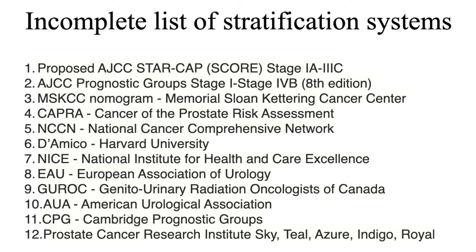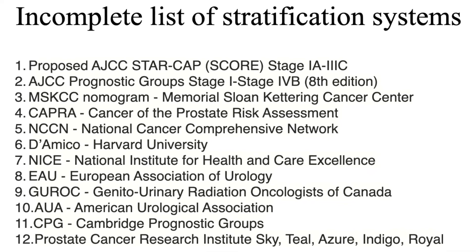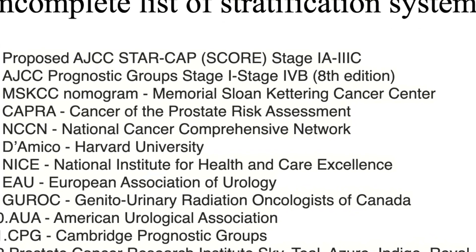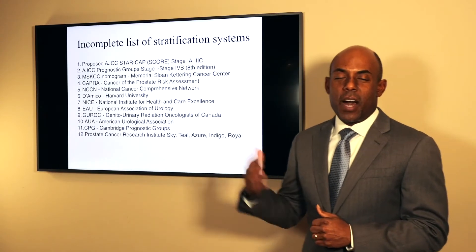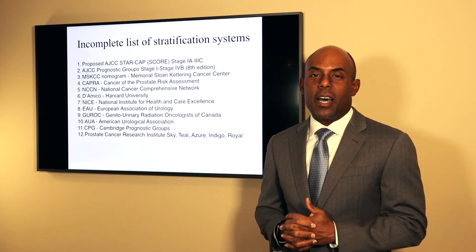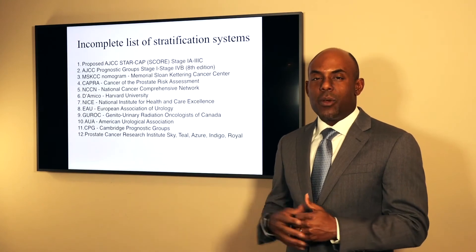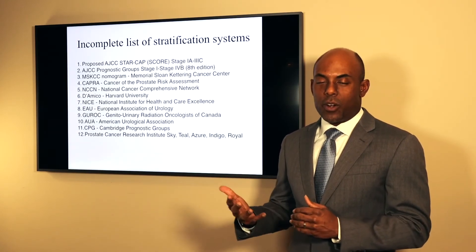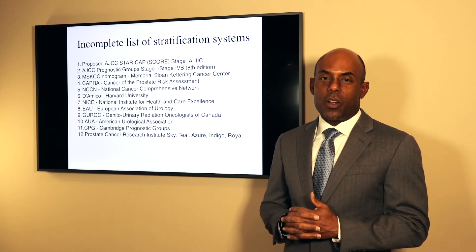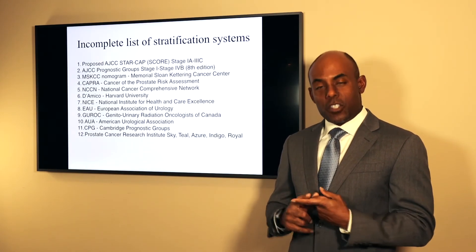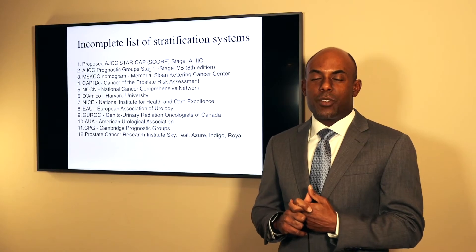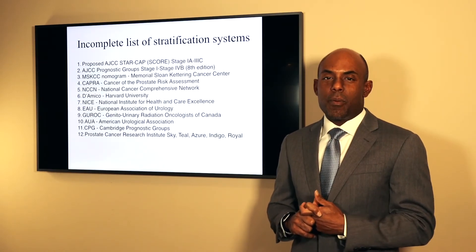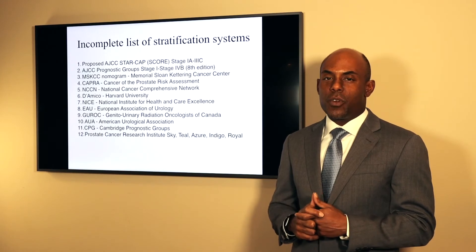Here's an incomplete list of the stratification systems currently used for prostate cancer. Basically, what they do is take those five things we went over, give them certain weight and value, and then add them all up to give you a risk category. From that risk category, we're able to tell you what's the chance of getting rid of the cancer based on your PSA, and what's the chance of you dying from your prostate cancer with certain forms of treatment.